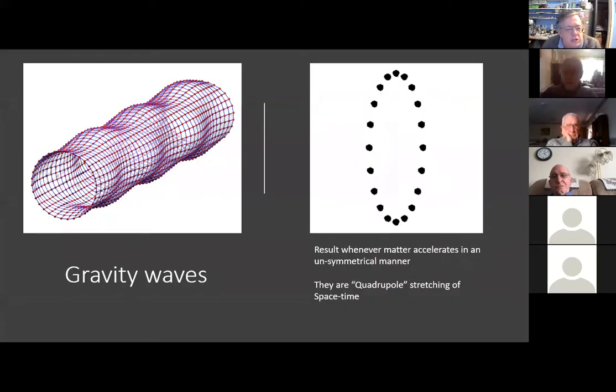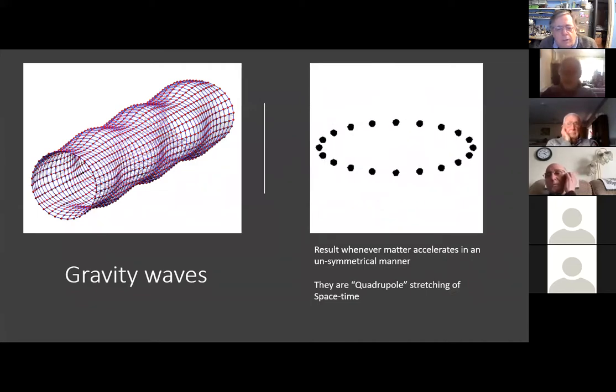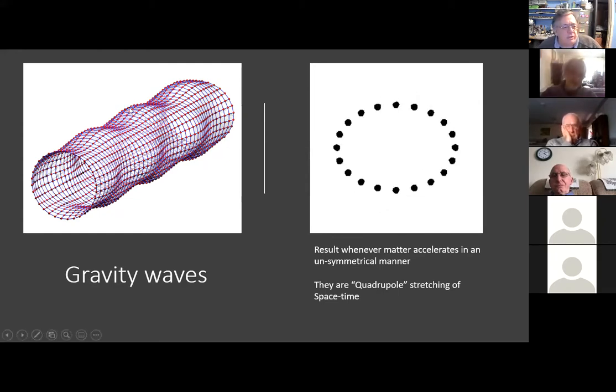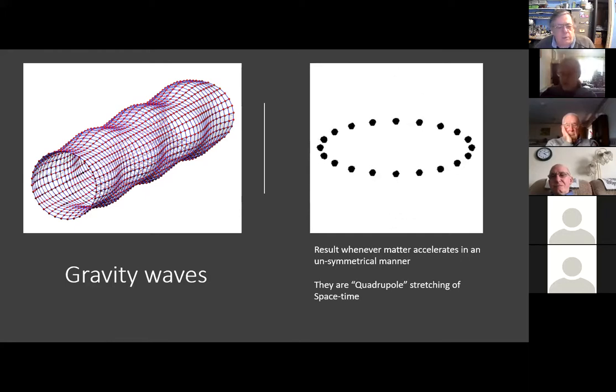They're also a little bit strange in that they aren't a dipole as in a positive and a negative that we have with electromagnetism. They're a quadrupole field, which means that the oscillation is going from tall thin to short fat and back again. So as a gravity wave passes through you, you would do the same thing. You become a bit taller and thinner and then a bit shorter and fatter as the wave passes through you. That shape is trying to be shown by the mesh diagram on the left there.